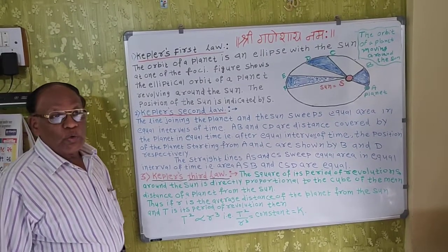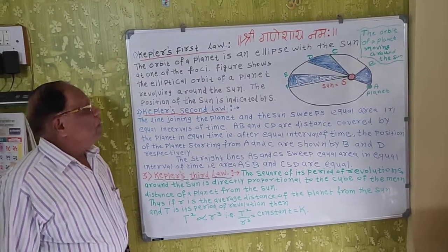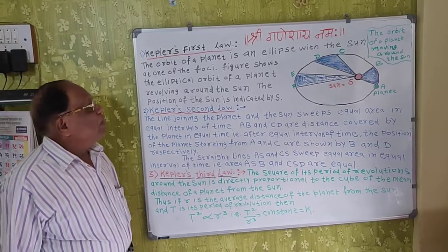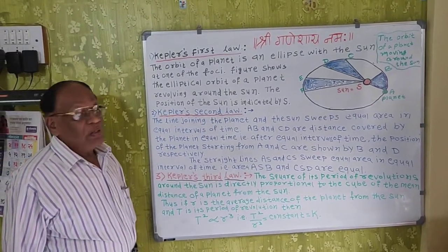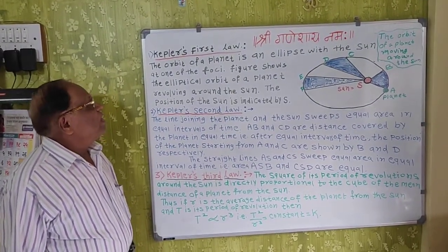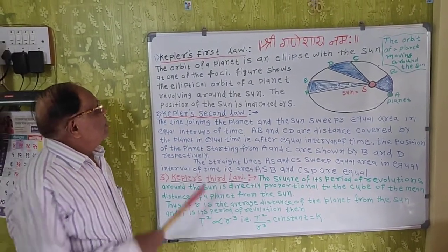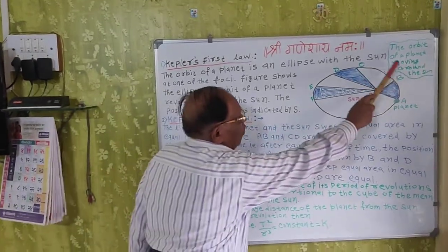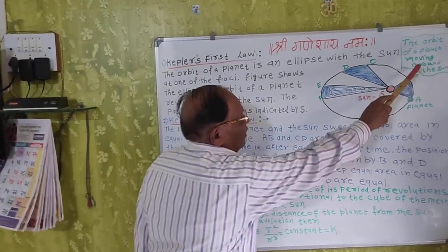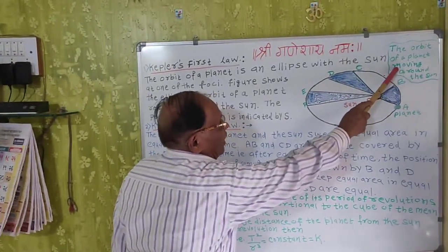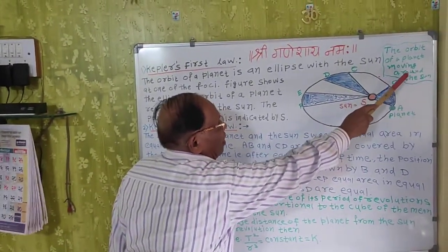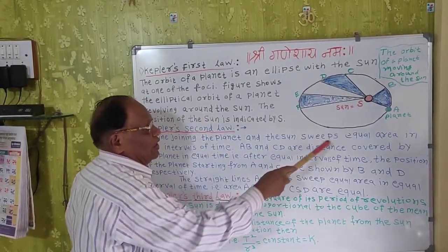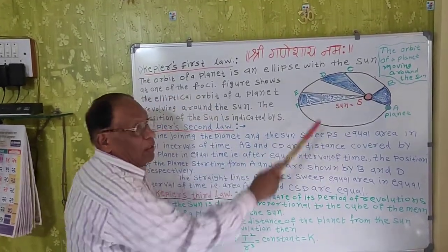Good evening students. We are going to learn Kepler's laws. The orbit of a planet moving around the sun is shown in the figure.